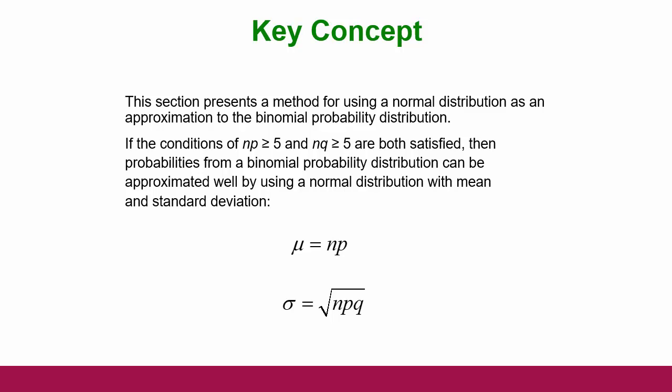And q is always the complement of p. So if p is 13%, q is 87%. If p is 25%, q is 75%. And again, n is still the sample size. You have to check both of those, and as long as both are satisfied, then the probabilities from a binomial probability distribution can be approximated fairly well with a normal distribution.